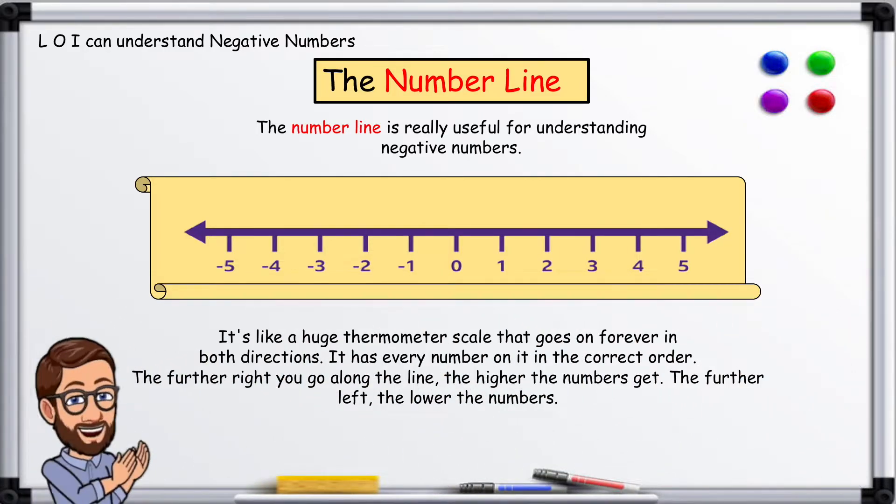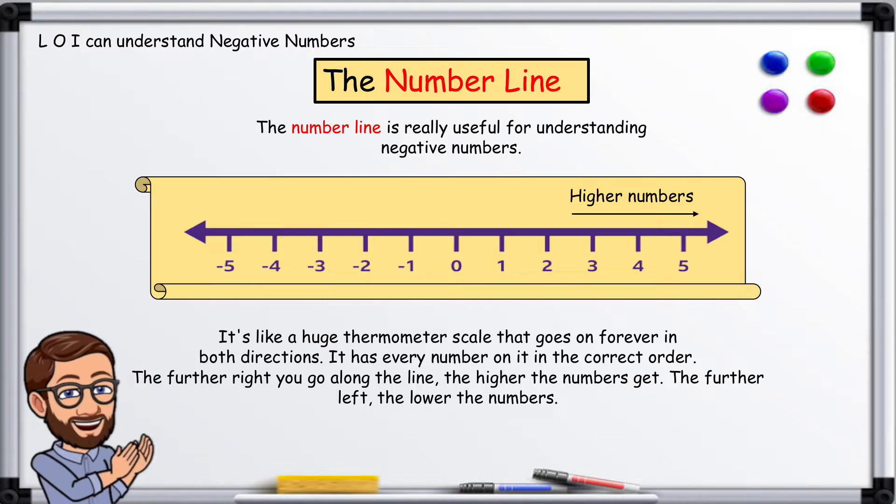The further right you go along the line, the higher the number gets. The further left you go, the lower the number is.